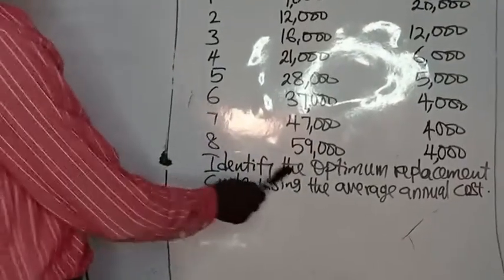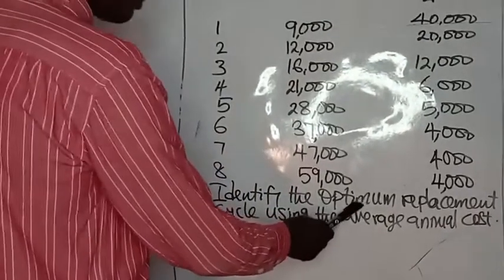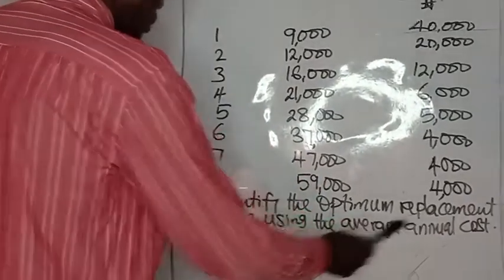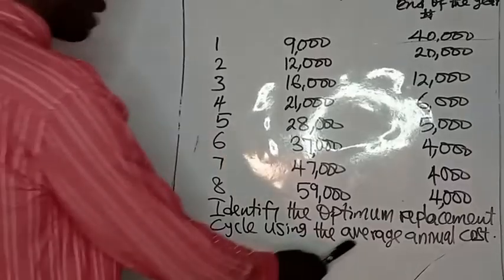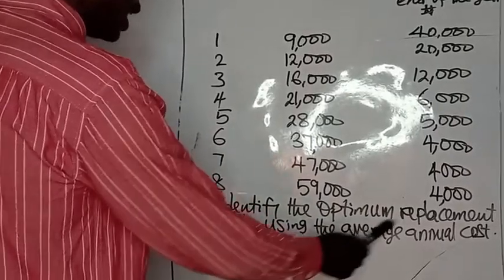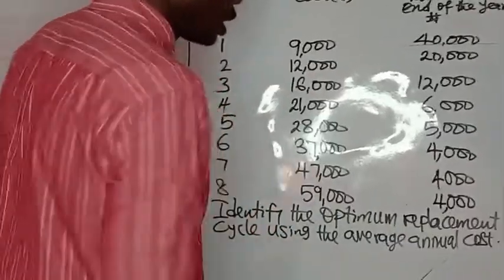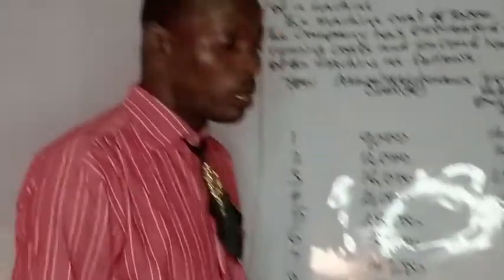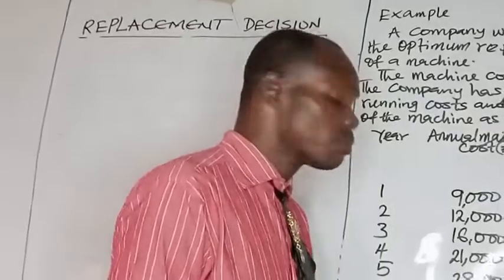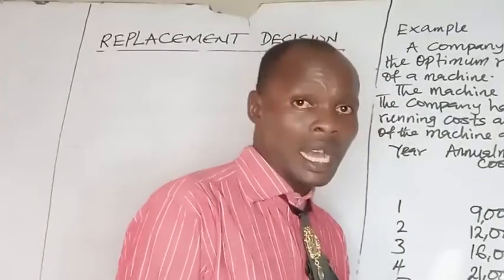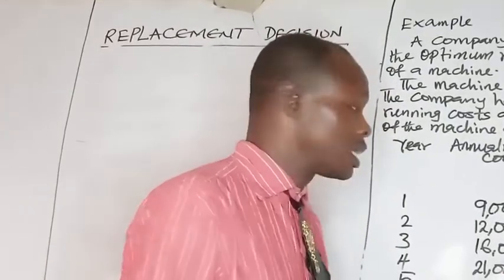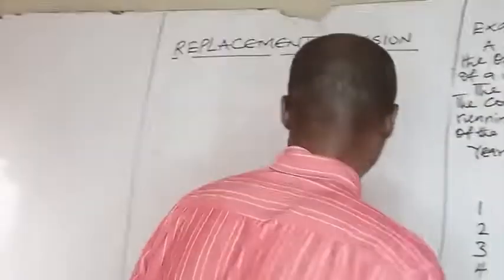Identify the optimum replacement cycle using the average annual cost. This question is obtained from the ICAN study text. Now let's have the solution.